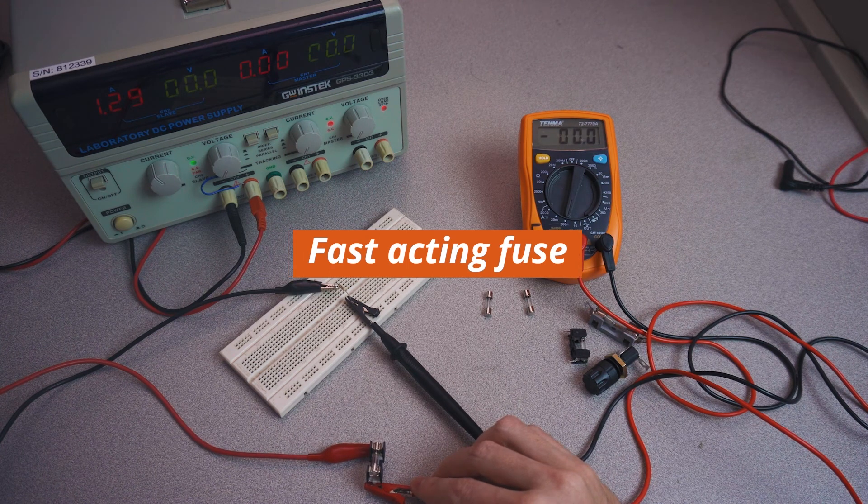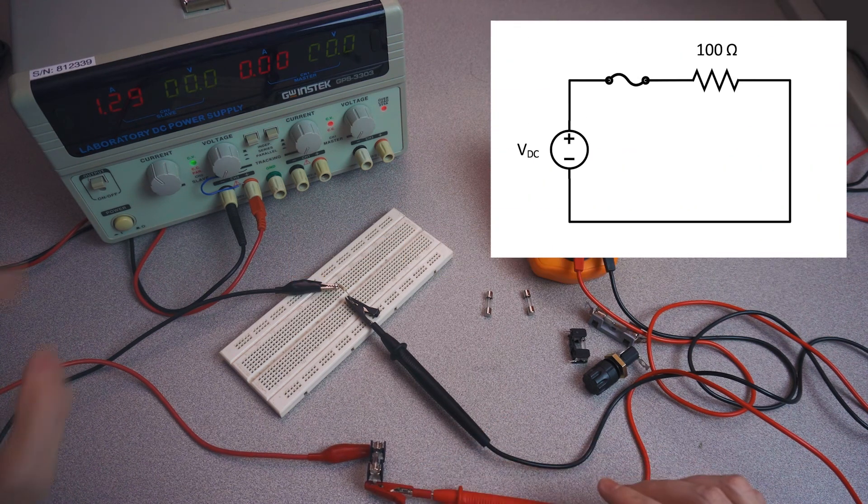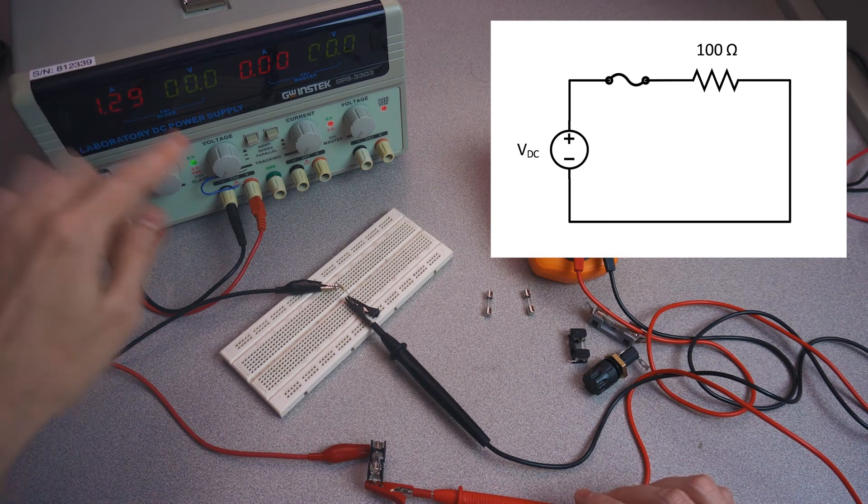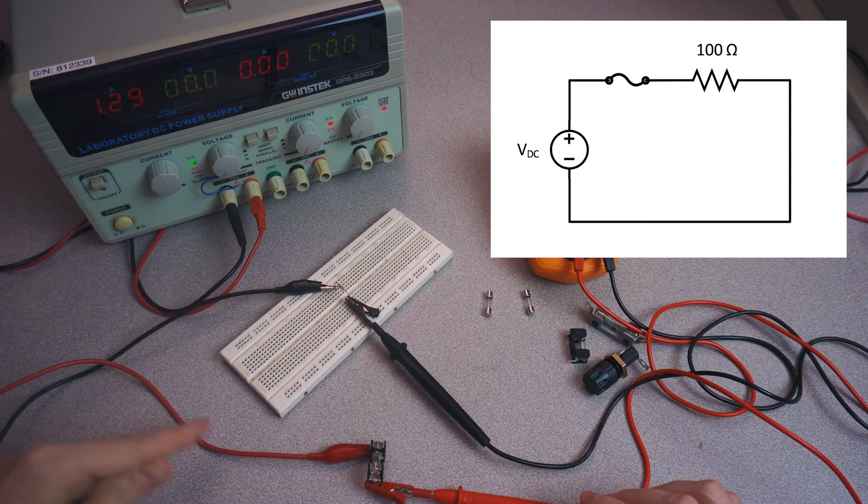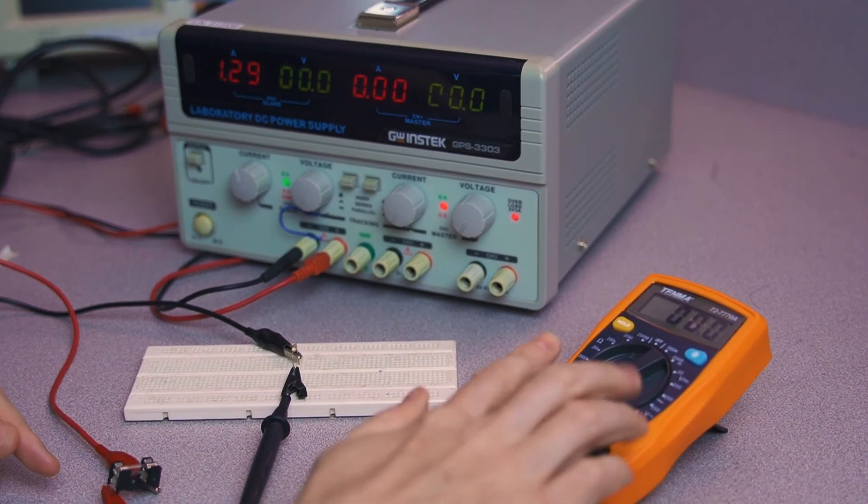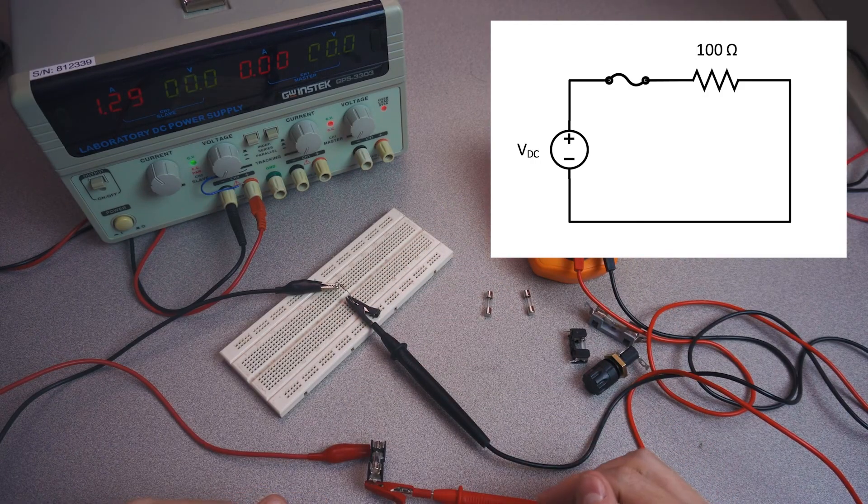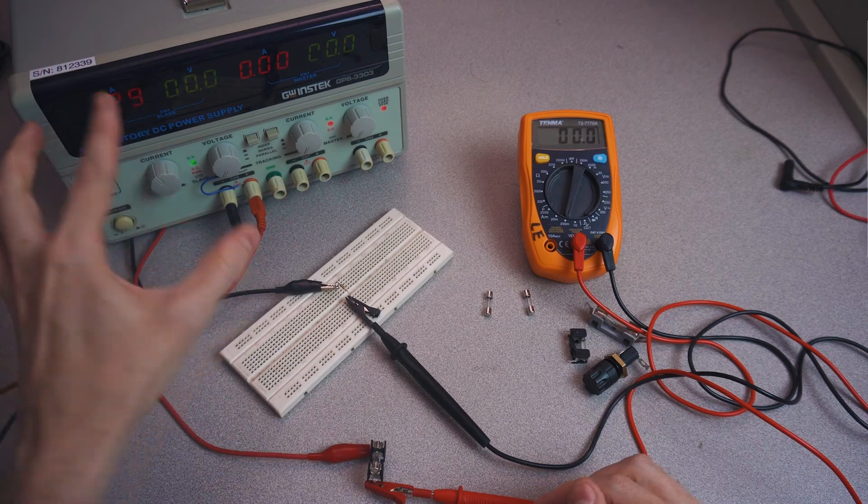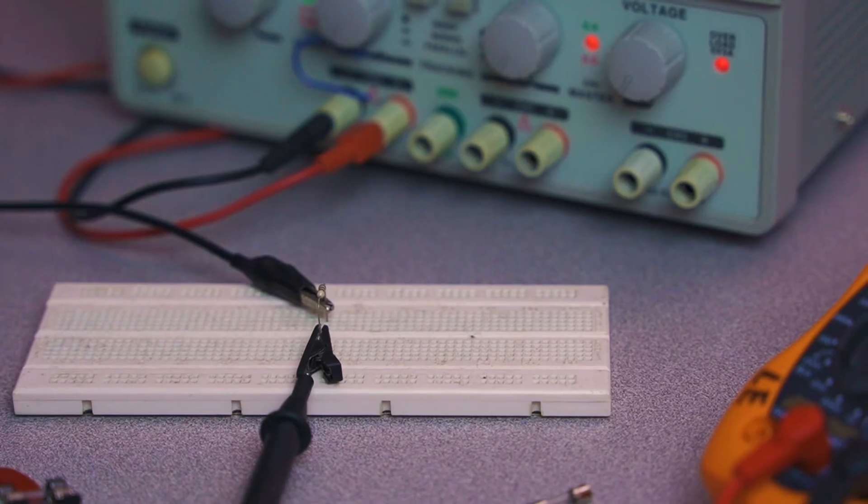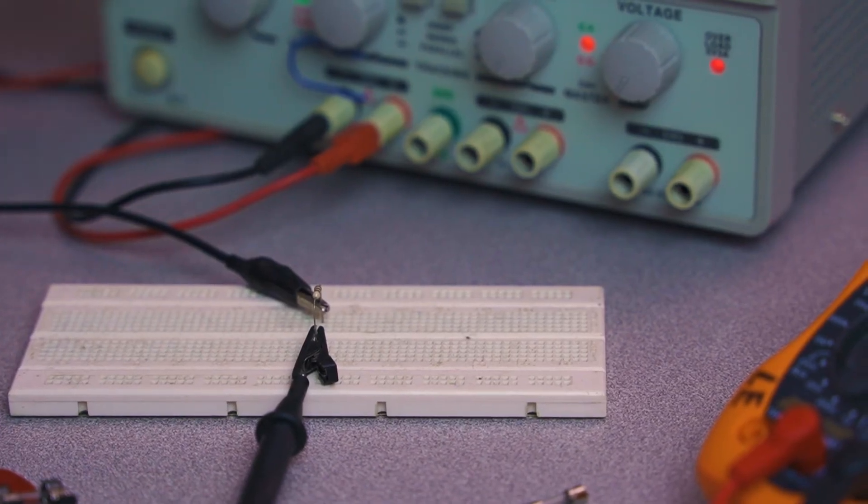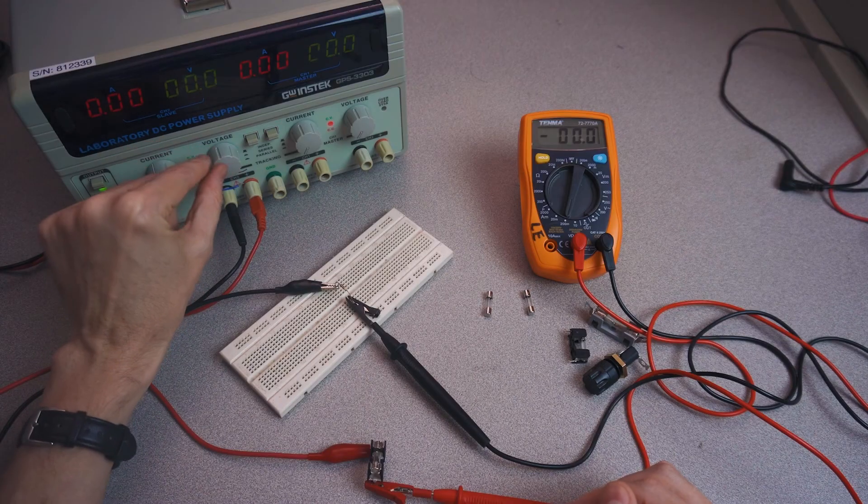So we're going to start with the fast acting fuse, and I have it wired up in a simple DC circuit. We have a DC power supply supplying a current that will pass through the fuse, through our ammeter, and then through a resistor. The reason I have the resistor in the circuit is so that when I change the voltage here of the DC power supply, the current won't suddenly get too high.